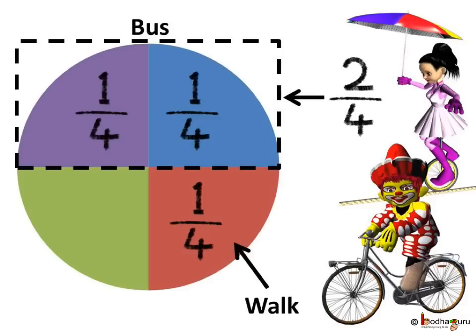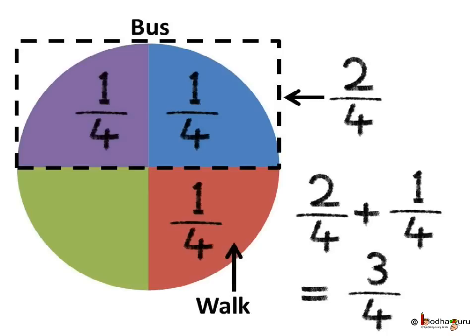2 by 4 means 2 one-fourths. That is, by bus he travelled one-fourth plus one-fourth. And then he walked another one-fourth. So it is equal to 3 one-fourths of km. So 2 by 4 plus 1 by 4 is equal to 3 by 4.